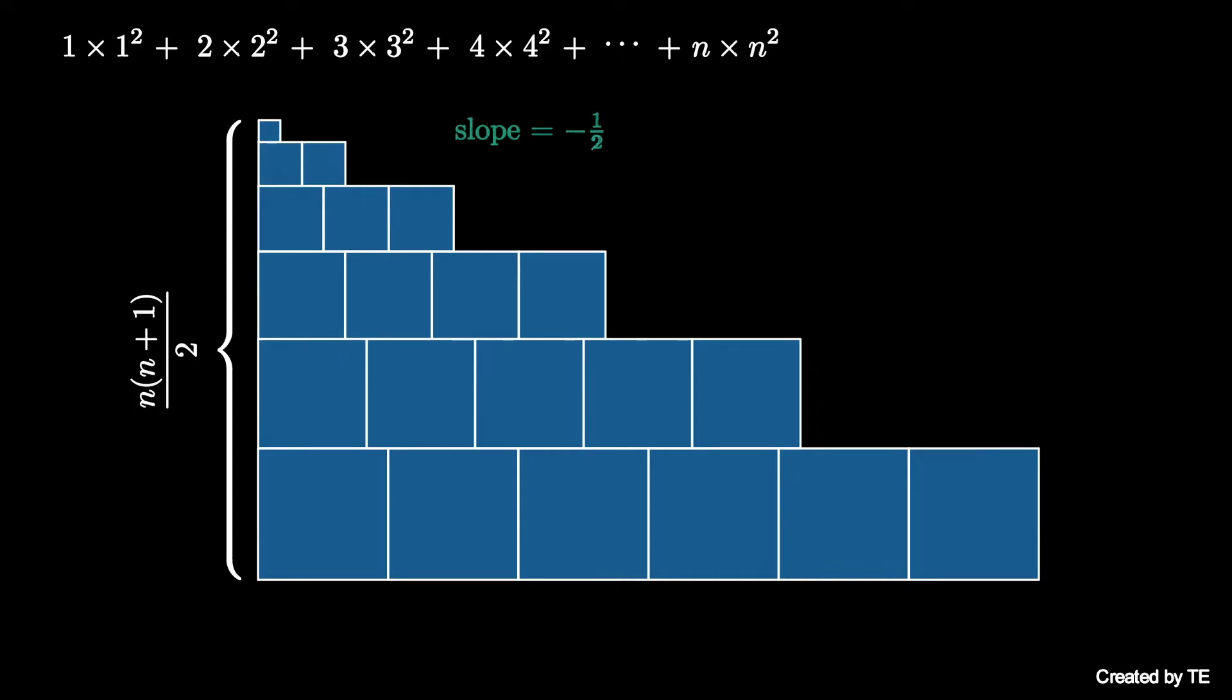The line of slope -1/2, starting from the top left, hits the upper left corner of the last square in every row and produces a triangle. This triangle has base length n(n+1).